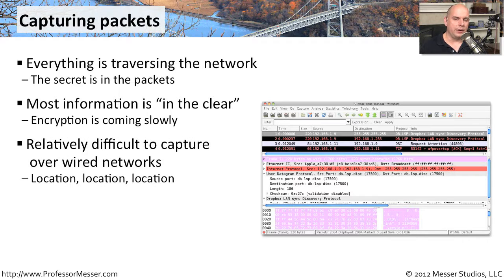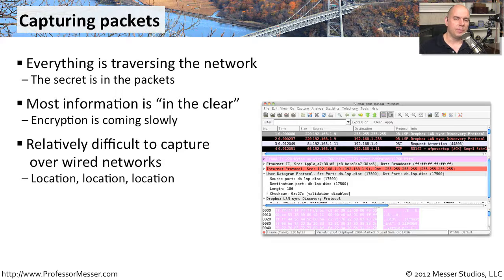If the network is wired, it becomes a little bit more difficult to capture that information. You have to get some type of physical connectivity into the network. And in some cases, on many switch networks, you have to reconfigure the switch in order to see that information. Otherwise, you're doing things like ARP spoofing or ARP poisoning, and they have their own disadvantages in those particular situations.